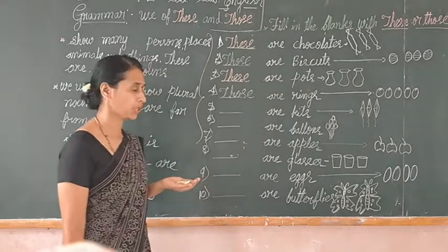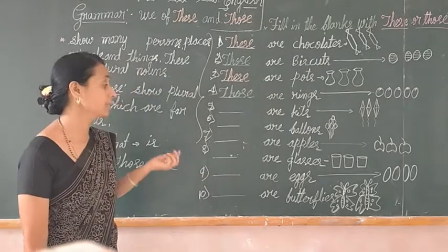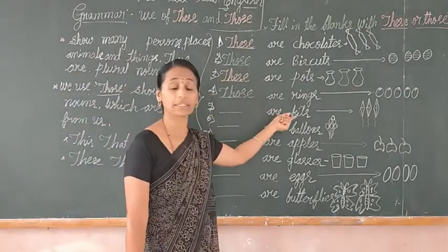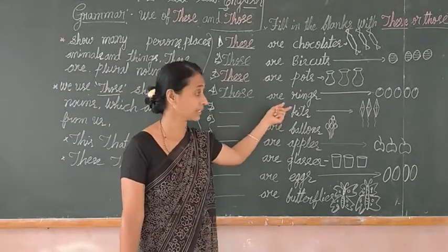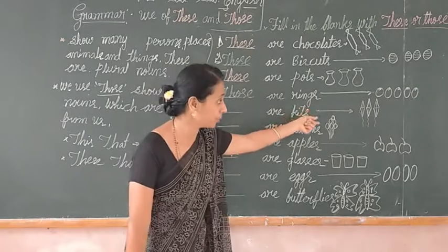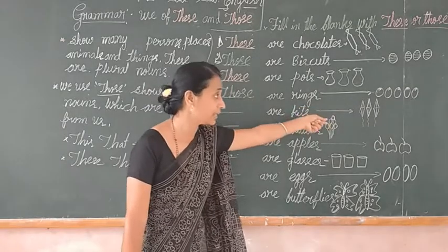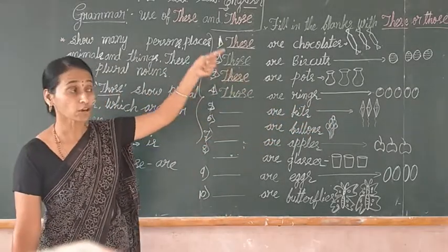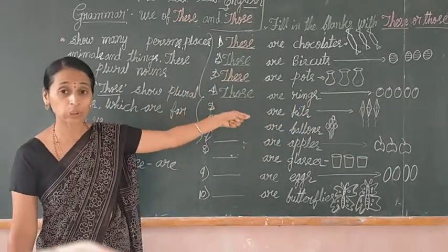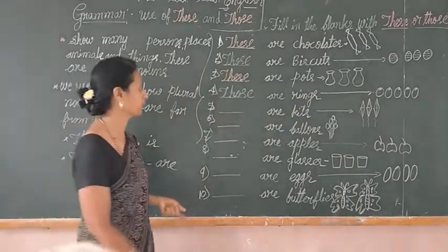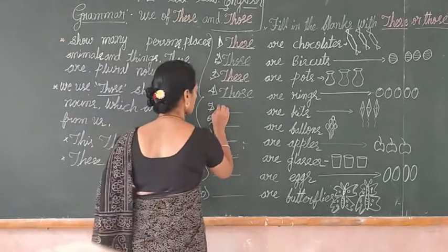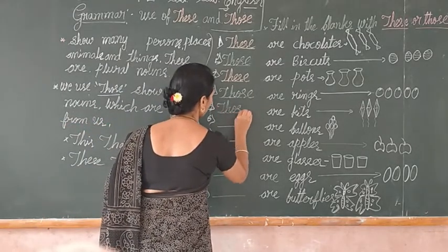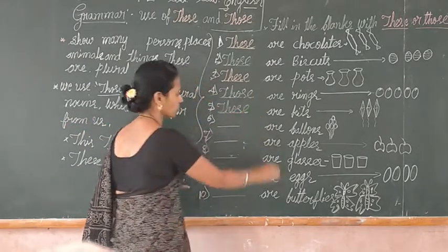Fifth example: blank of kites. Are the kites near to me or far away? Yes, kites are far away, so we can use 'those.'